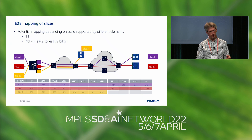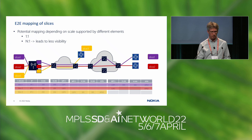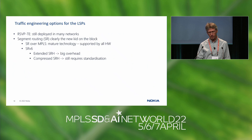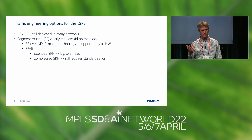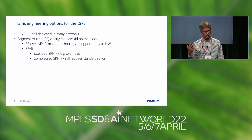Besides mapping the slices themselves, the QoS parameters also need to be mapped — I won't go into the details here, but it is a natural part of the evolution. Looking at the LSPs, these need to be traffic-engineered to meet constraints such as latency and bandwidth.